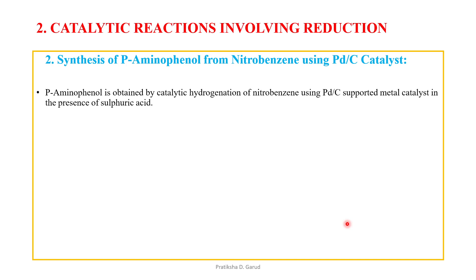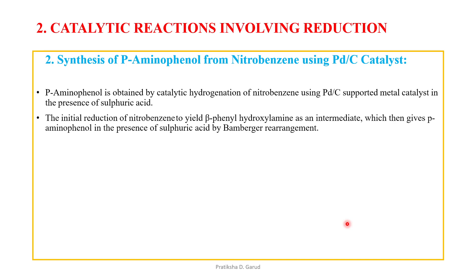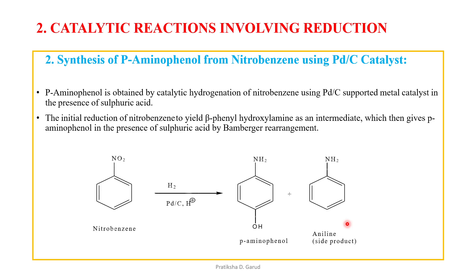The second reduction reaction is the synthesis of para-aminophenol from nitrobenzene using a palladium-supported metal catalyst. Para-aminophenol is obtained by catalytic hydrogenation of nitrobenzene using palladium catalyst in the presence of sulfuric acid. The initial reduction of nitrobenzene gives beta-phenylhydroxylamine as an intermediate, which then rearranges via the Bamberger rearrangement to give para-aminophenol in the presence of sulfuric acid.